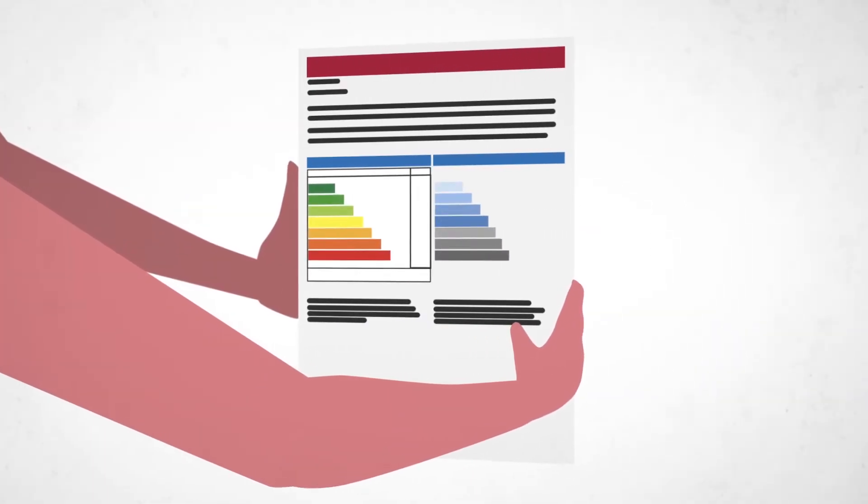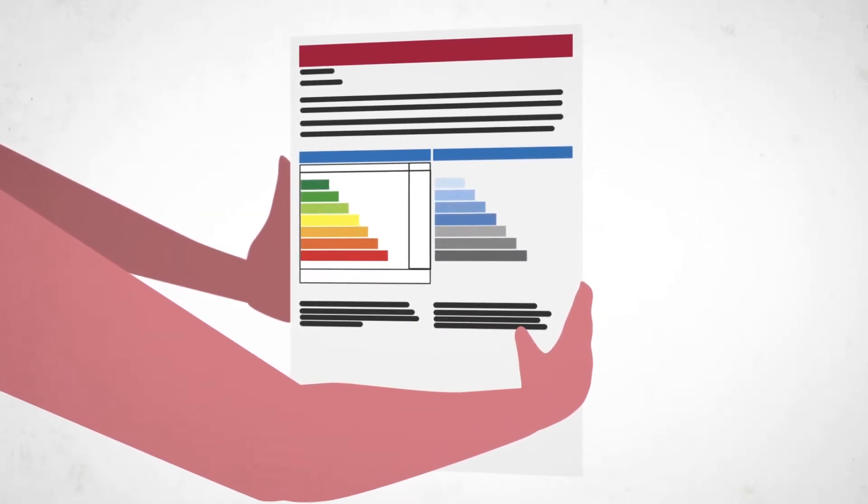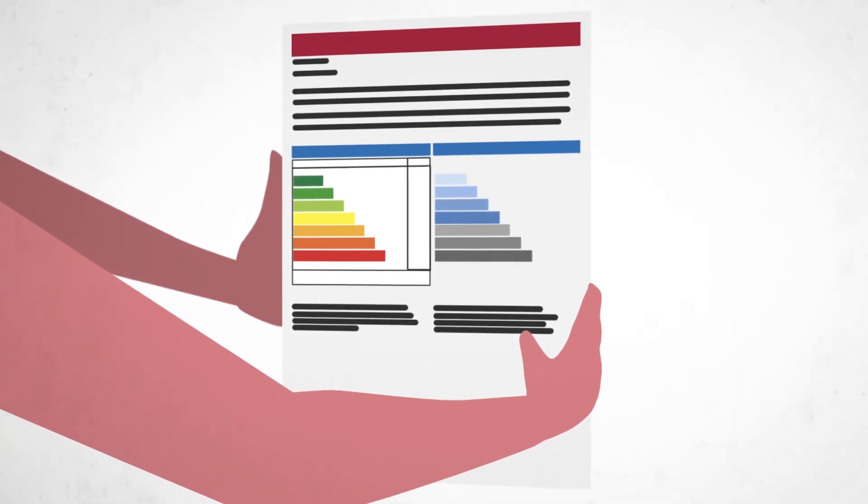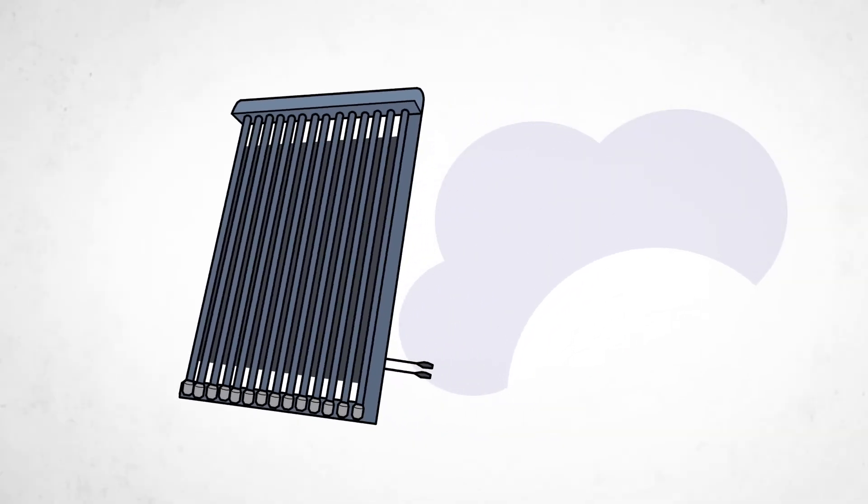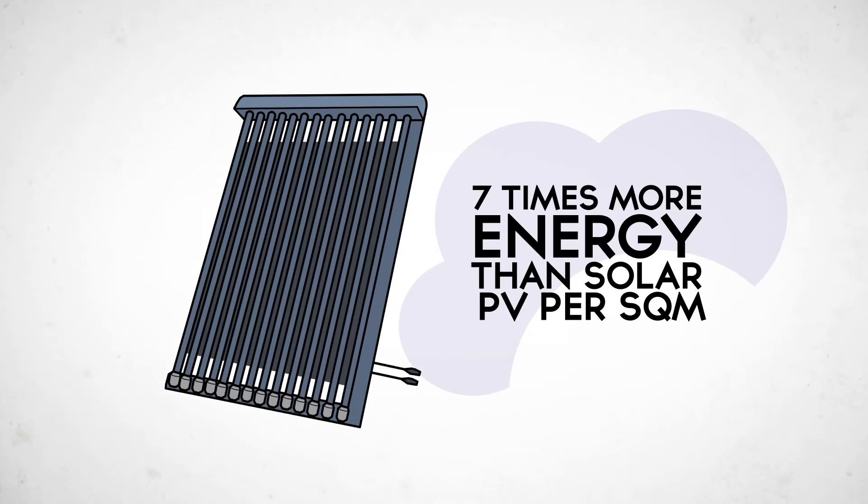Using Hone Thermal Electric technology on a new-build home will achieve the highest energy rating with the lowest costs. The Hone Thermal Electric panel produces both heat and electricity and approximately 7 times more energy than solar PV per square meter.